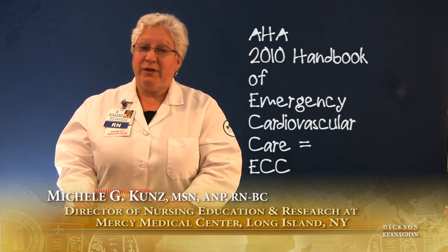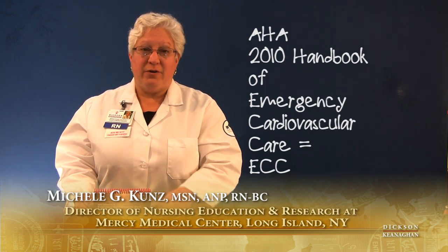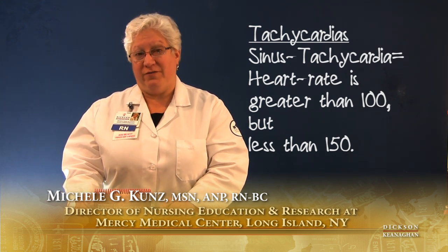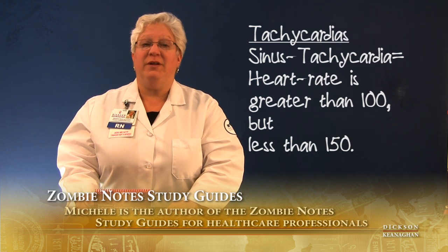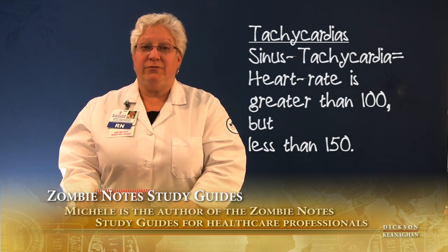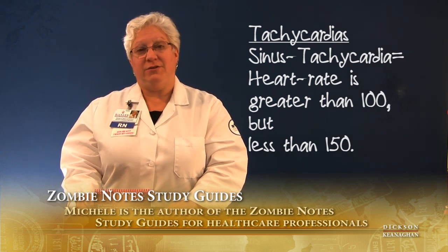Tachycardias can consist of a number of arrhythmias. Sinus tachycardia is a rhythm that's over a hundred but less than 150, and we can normally treat sinus tachycardia as long as we find out the cause. What I'm really talking about is heart rates that are over 150. This can get a patient very symptomatic and become unstable very quickly, where we have to urgently treat them.